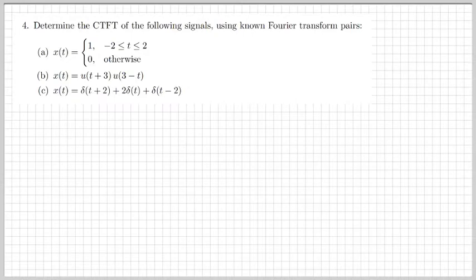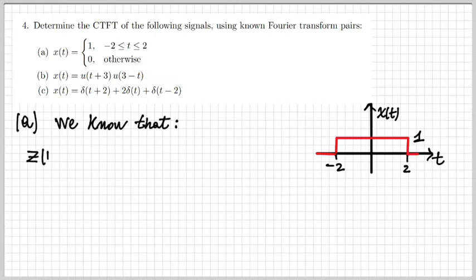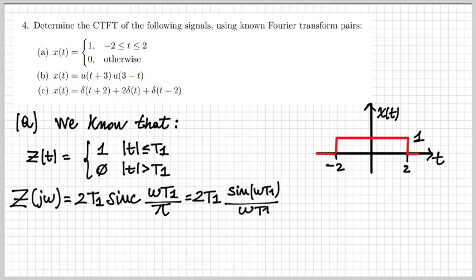Here's the first exercise for today. We need to determine the continuous-time Fourier transform of certain signals by using known Fourier transform pairs. Let's start with part a. We have a signal x(t) which is one between minus two and two. To calculate the Fourier transform, we recall that signals of this type — rectangular signals — where z(t) is one between minus T1 and T1 and zero elsewhere, have a Fourier transform Z(jω) which is a sinc function: 2T1 sinc(ωT1/π), equivalently written as 2T1 sin(ωT1)/(ωT1).